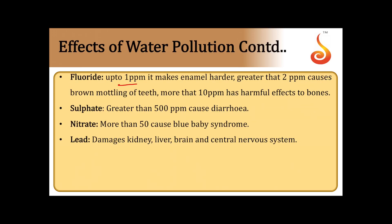Fluoride up to 1 ppm makes tooth enamel harder; above 2 ppm causes brown mottling of teeth; above 10 ppm has harmful effects on bones. Sulfates greater than 500 ppm cause diarrhea. Nitrates more than 50 ppm cause blue baby syndrome. Lead damages the kidney, liver, brain, and central nervous system.